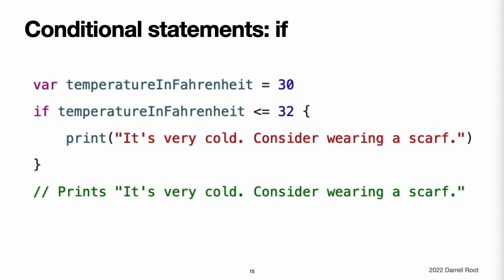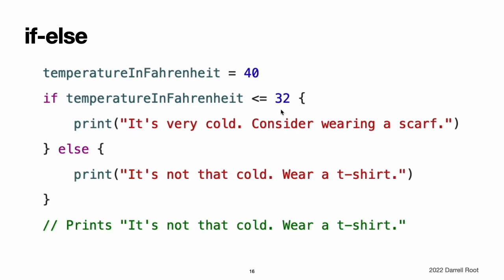If. In its simplest form, the if statement has a single condition. It executes a set of statements only if that condition is true. This example checks whether the temperature is less than or equal to 32 degrees Fahrenheit, the freezing point of water. The if statement can provide an alternative set of statements known as an else clause for situations when the if condition is false, indicated by the else keyword. Because the temperature has increased to 40 degrees Fahrenheit, it is no longer cold enough to advise wearing a scarf, and so the else branch is triggered instead.